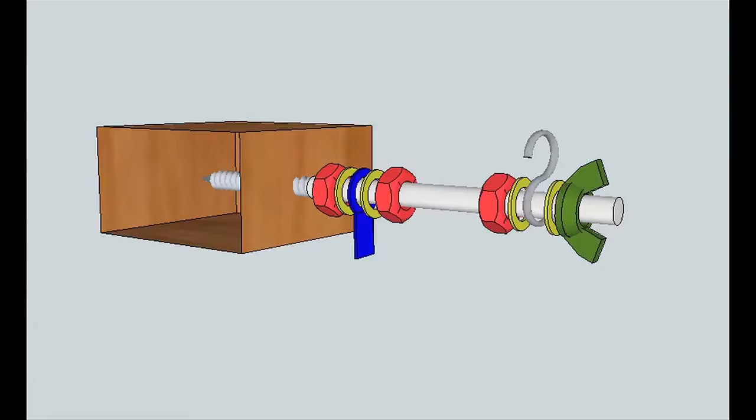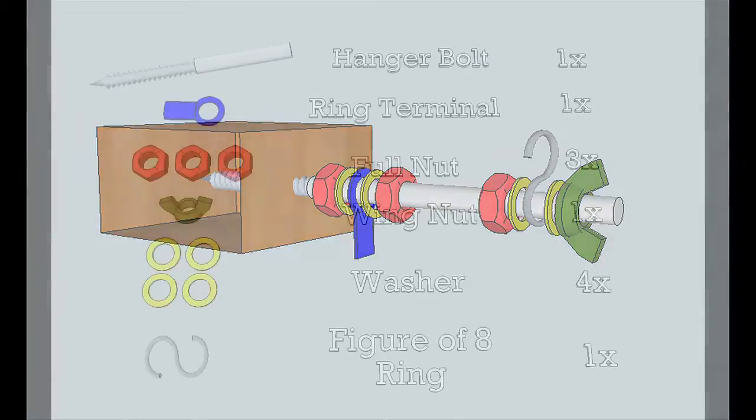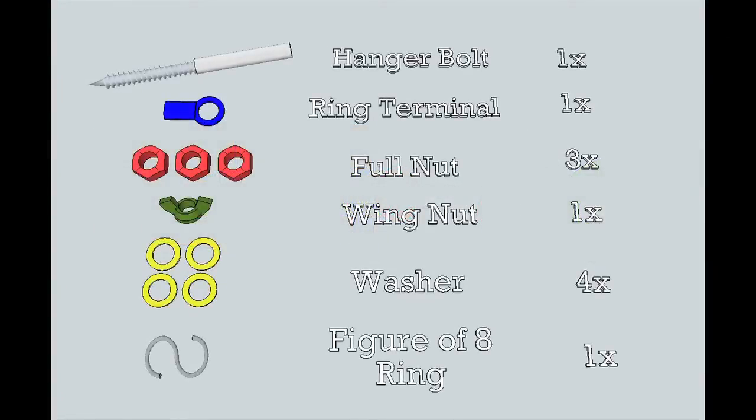You should also notice that the ring terminal is attached directly to the machined portion of the hanger bolt. In addition to the single 10-24 hanger bolt we'll need one ring terminal, three 10-24 full nuts, one 10-24 wing nut, four number 10 washers, and a single figure of 8 ring.